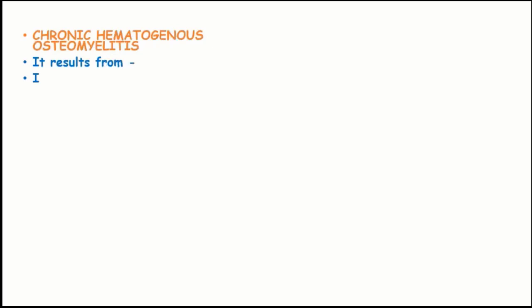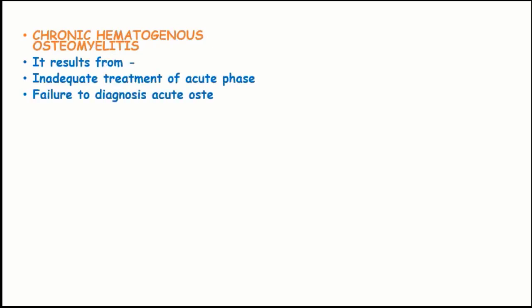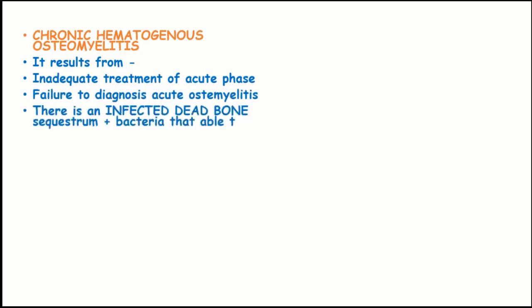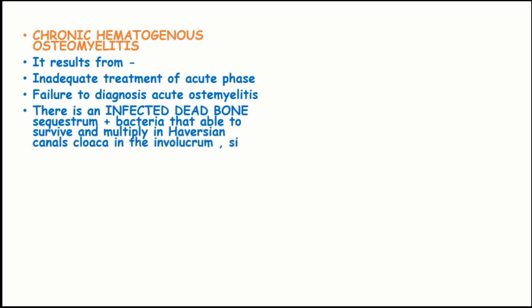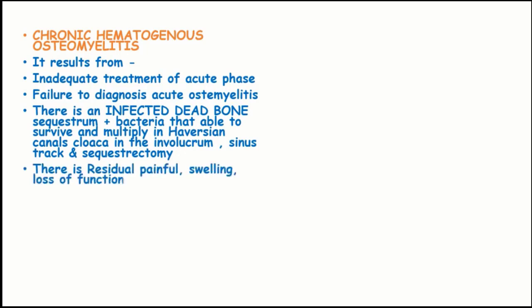Chronic hematogenous osteomyelitis results from inadequate treatment of the acute phase or failure to diagnose acute osteomyelitis. The dead bone sequestrum harbors bacteria that are able to survive and multiply within Haversian canals, cloaca, involucrum, sinus tracts, and sequestrum. These cases present with painful swelling and loss of function, with more than one draining sinus.